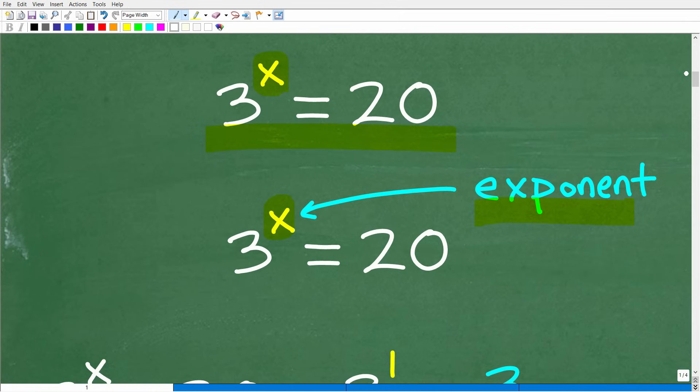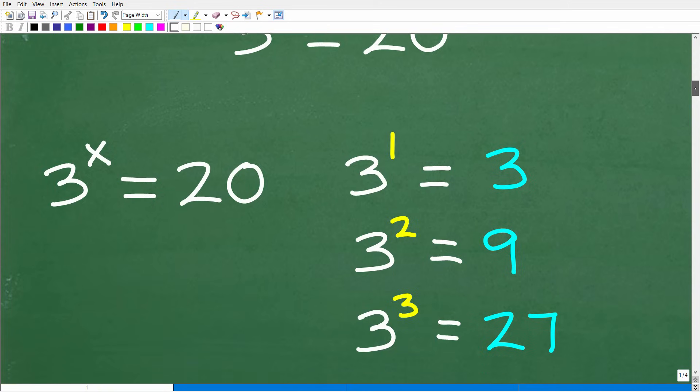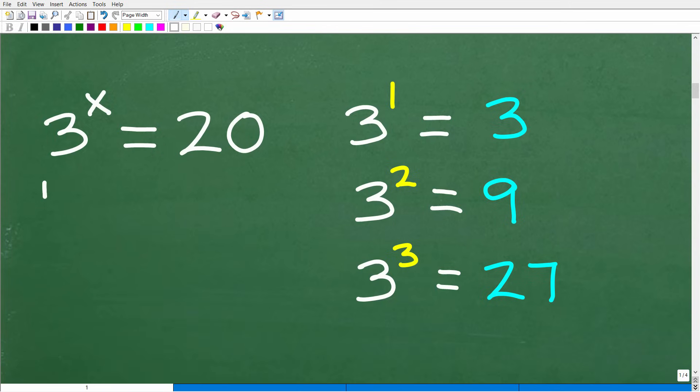So this particular equation, what kind of gives us a hint here is where the variable is at. The unknown value is in the exponent. So this type of equation is what we call an exponential equation. Now, what is the objective here? Well, we're trying to find the solution, which is the value of X that makes this equation true.